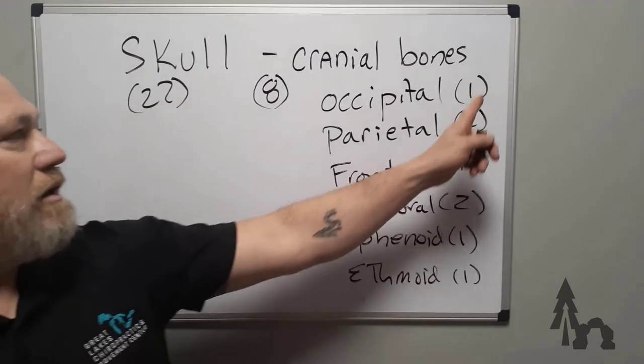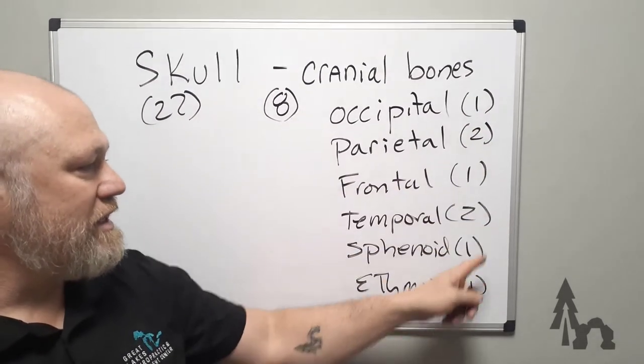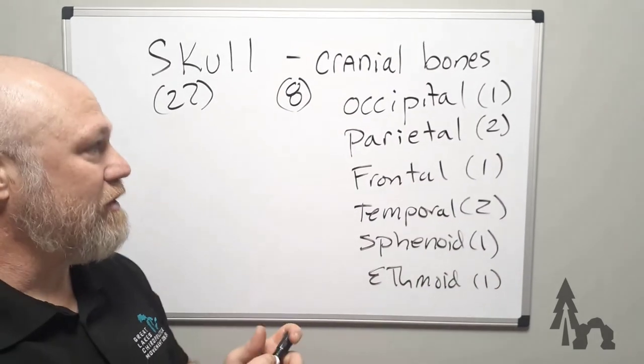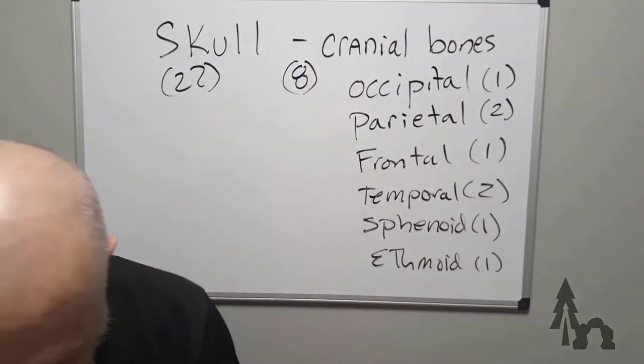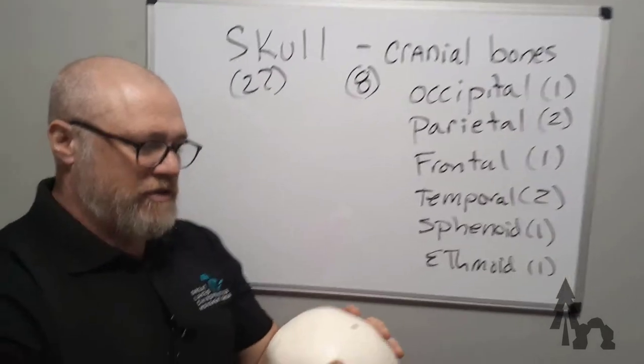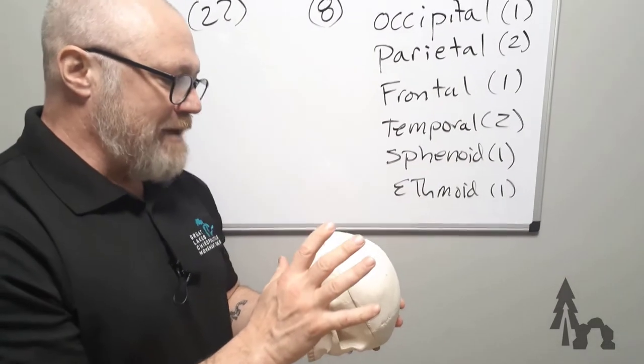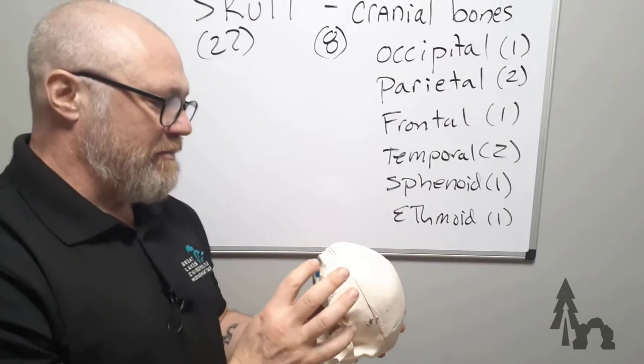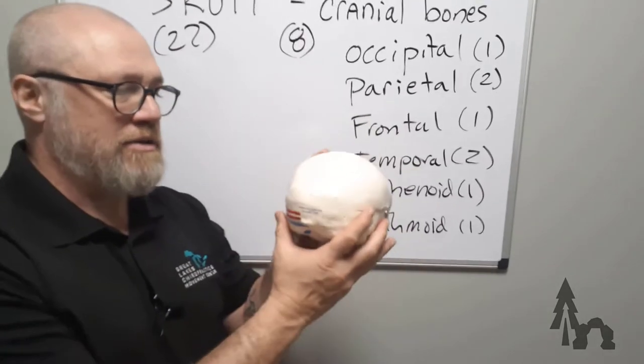So those would be three, four, six, seven, and eight bones of the cranium. So now I'm going to point them out on my model and just a few major landmarks that would be of interest later. So we have bony attachments and things.